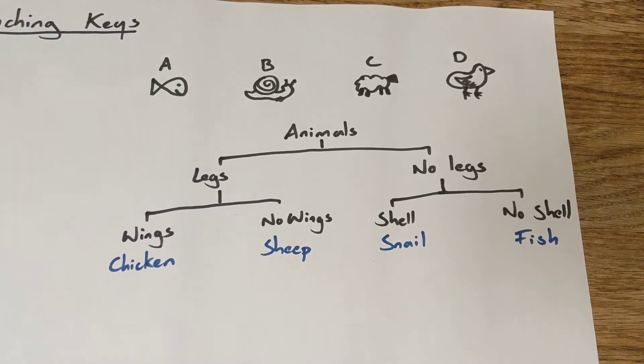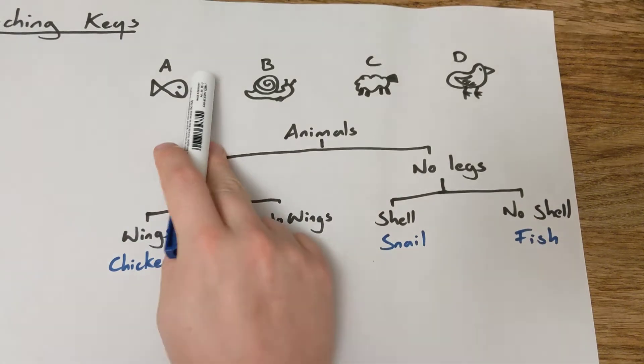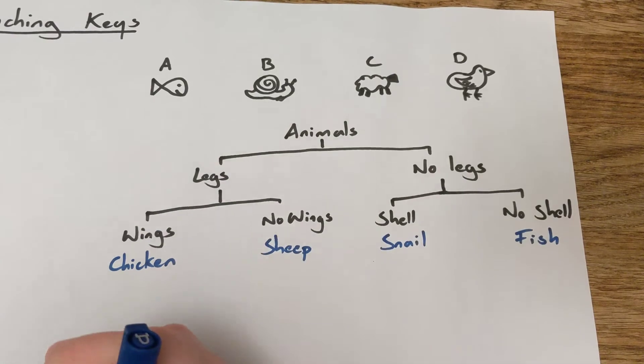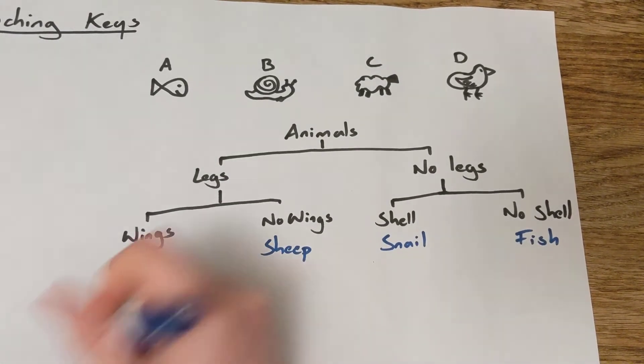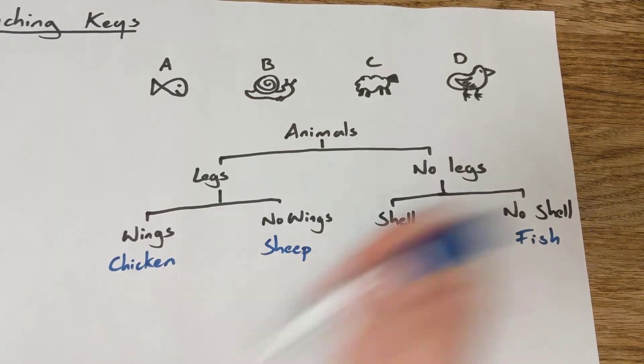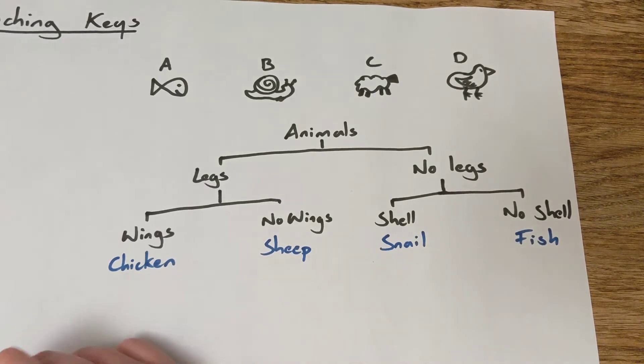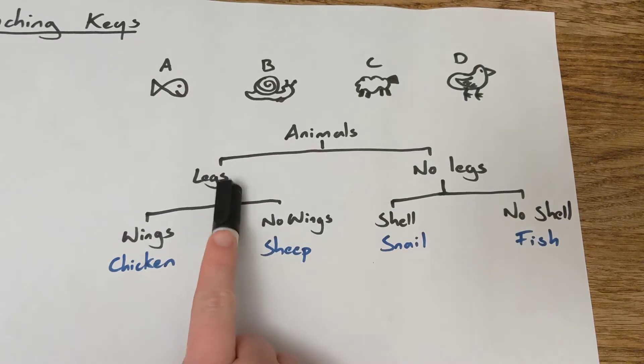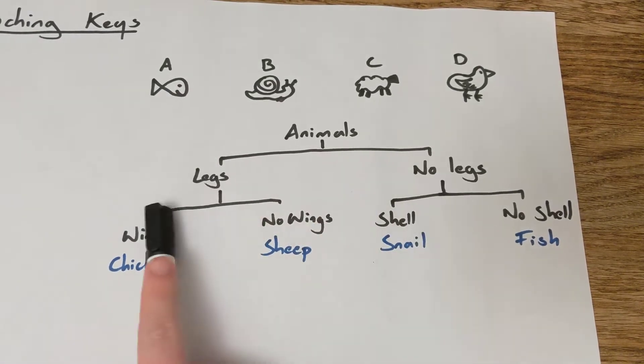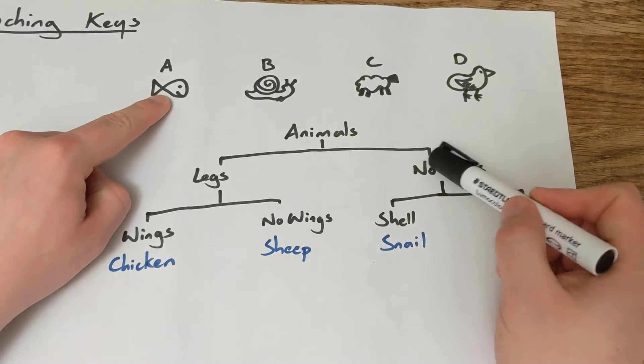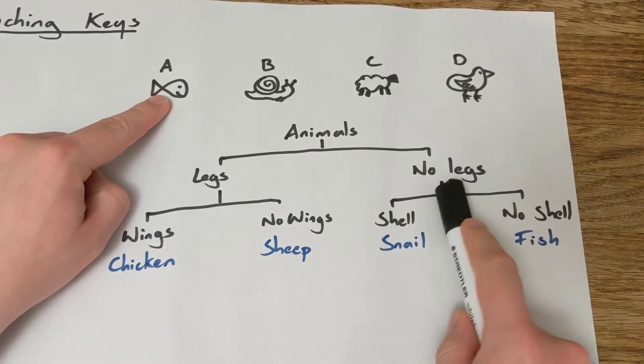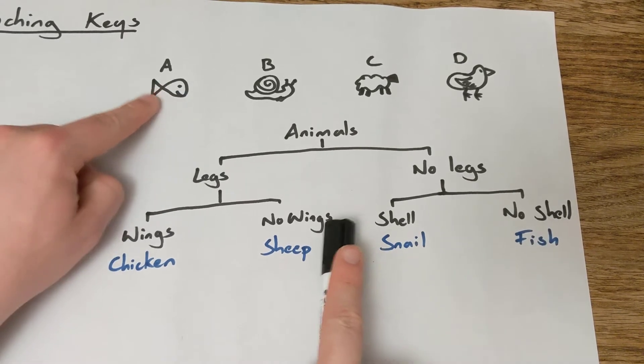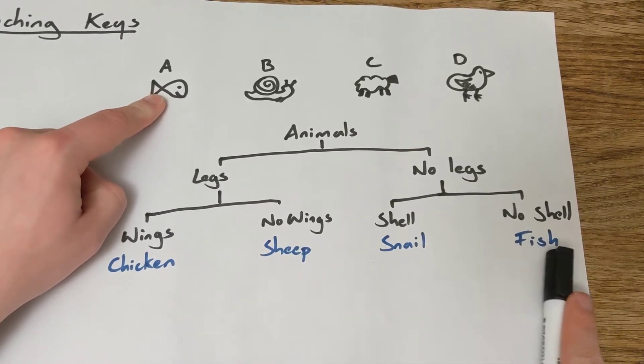So here we go with another example. Now I've done some beautiful drawings of animals up here. And I know just by looking at them, you'll be able to tell what they are straight away. But if we couldn't, we can use this branching key to find them out. And so let's look at animal A then. Our first choice is, does this have legs or no legs? Well, animal A, that's got no legs. So then we come down here. So then our next choice is, does it have a shell or no shell? Well, that has no shell on it that I can see. So that is a fish.